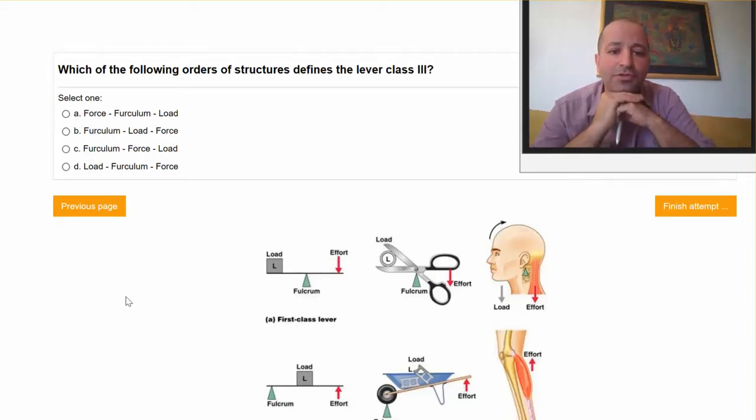Which of the following orders of structures defines the lever Class 3? A. Force - Fulcrum - Load, B. Fulcrum - Load - Force, C. Fulcrum - Force - Load, or D. Load - Fulcrum - Force.